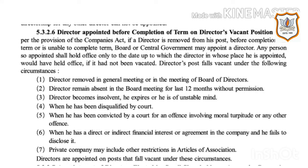A director's post falls vacant under the following circumstances: the director is removed in a general meeting or a board meeting; the director remained absent from board meetings for the last 12 months without permission; the director becomes insolvent, expires, or is of unstable mind; when disqualified by a court; when convicted by a court for an offense involving moral turpitude; when there is a direct or indirect undisclosed financial interest or agreement with the company; or when a private company includes other restrictions in its articles of association.